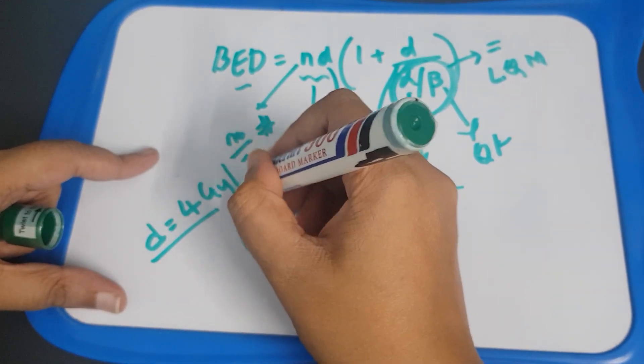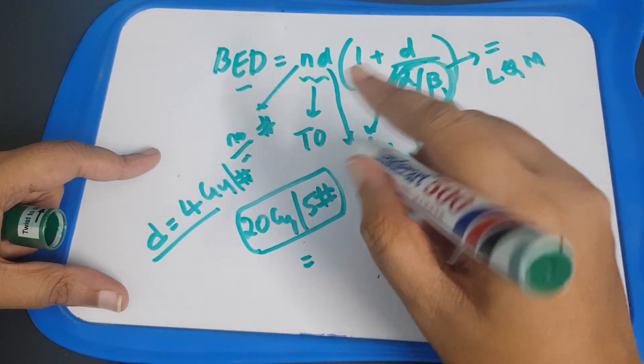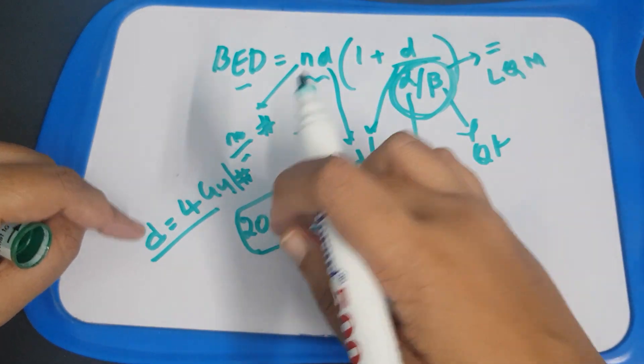4 gray you are giving per fraction. In each fraction you are giving 4 gray. Over 5 fractions you are giving total of 20 gray.